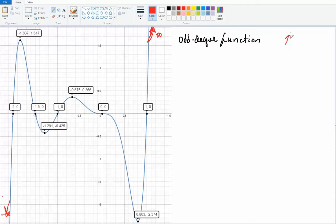So because of this, I know that the function is an odd degree function. And what about the leading coefficient? Well, I know that the leading coefficient is positive because the right side is going up.